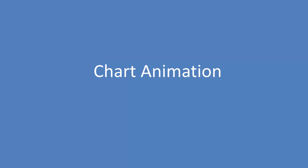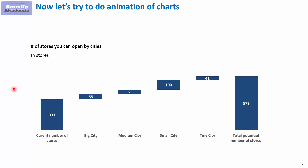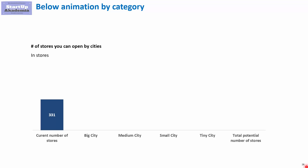The great thing about PowerPoint is that you can animate charts, so you can use chart animation. Let's see first how it looks like, and then I will show you how to do that in practice. Here we've got the waterfall chart we previously discussed, showing the number of stores we can build in different types of city. We've got the current number of stores and the target number of stores, and I can show everything at once or do it step by step.